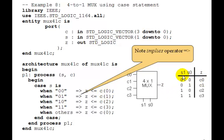See, we're just following the truth table over here. When 0,1 means when S is 0,1, Z gets assigned C1.